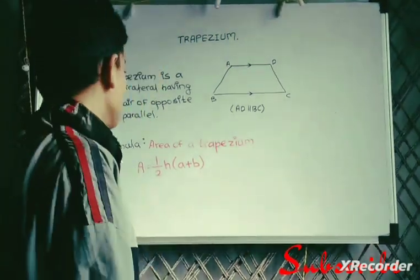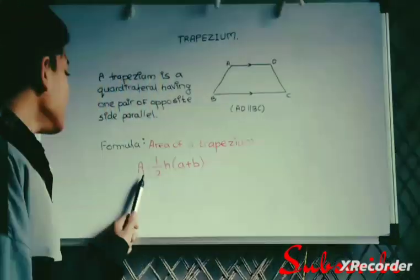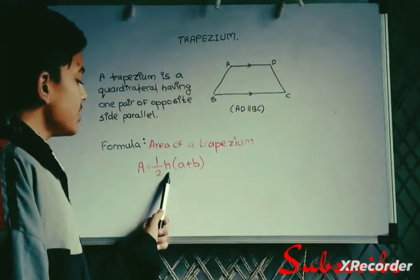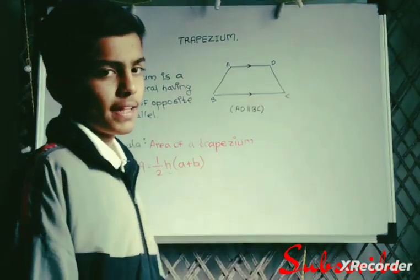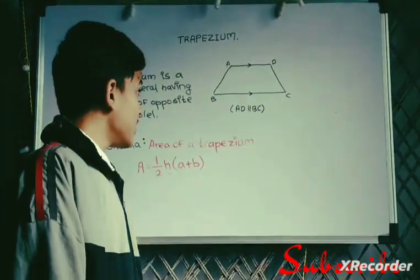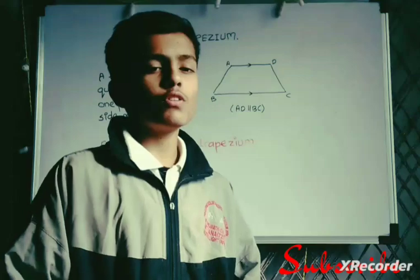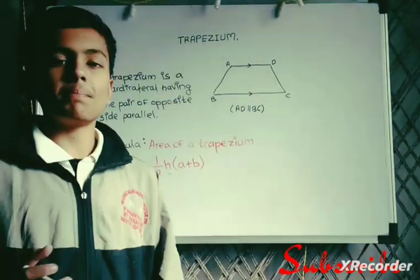For finding its area we have the formula: 1/2 multiplied by h in bracket (a plus b). So as we have started with our basic related to trapezium, we have learned the formula. Now let's get started for solving some questions related to trapezium.